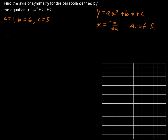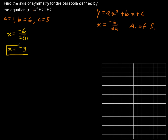Now let's find the equation of the axis of symmetry. So we have x equals the opposite of b, so the opposite of 6, over 2 times a, which is 1. Simplifying that, we have x equals negative 6 over 2, which is negative 3. That's our axis of symmetry, and that'll be a vertical line.